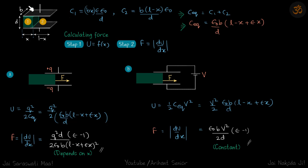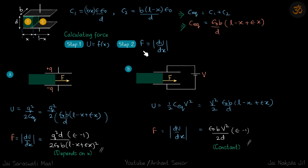Here is our capacitor setup. The width of the capacitor plate is b, the distance between the plates is d, and the length of the plate is l. If the dielectric has been inserted a distance x, the remaining empty length is l − x. Region one is where the dielectric is present and region two is the empty space. Our approach is to find the potential energy of the system first, then differentiate to get the force.